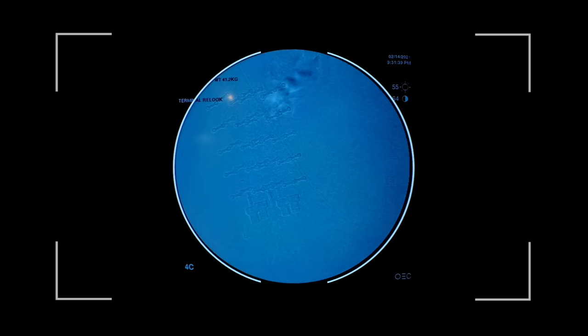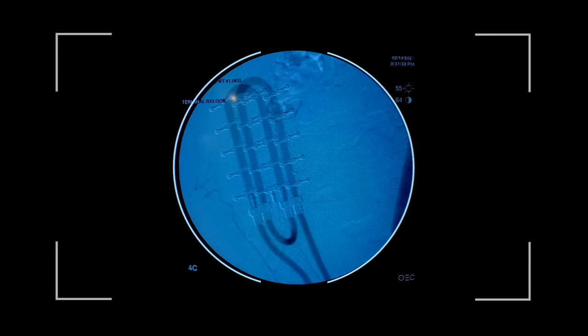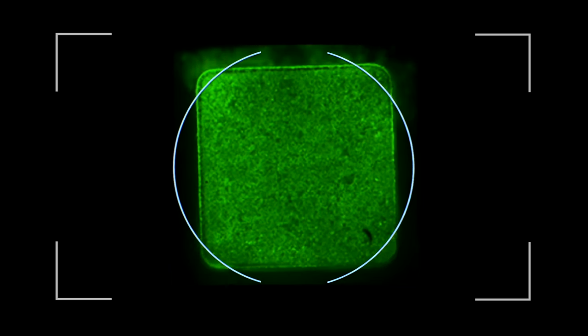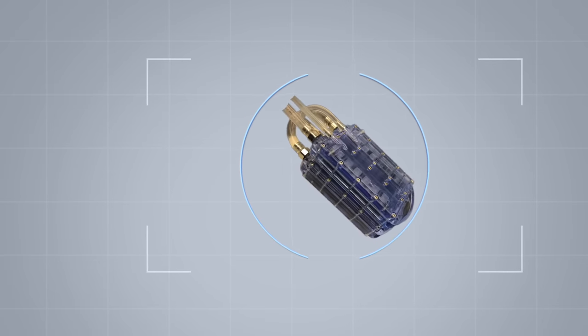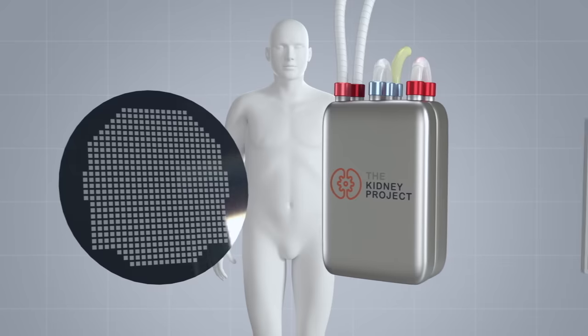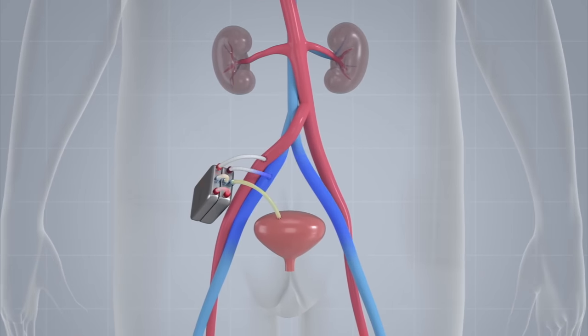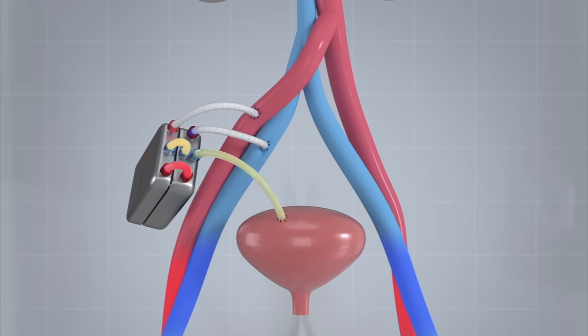In proof of concept experiments, the hemofilter operated under blood pressure alone without systemic anticoagulation, while the renal cells in the bioreactor remained alive and healthy without immunosuppression. Further improvements will scale up the prototypes with additional silicon membranes and renal cells, creating clinical devices that can demonstrate sustained treatment of kidney failure in human trials.